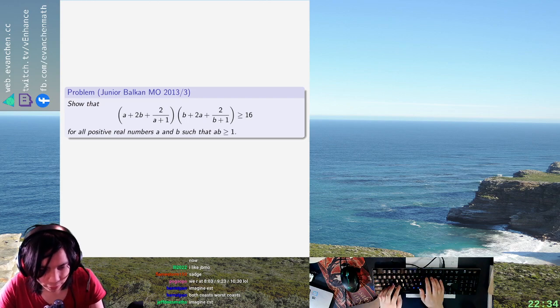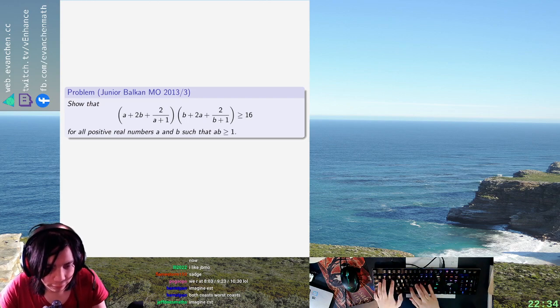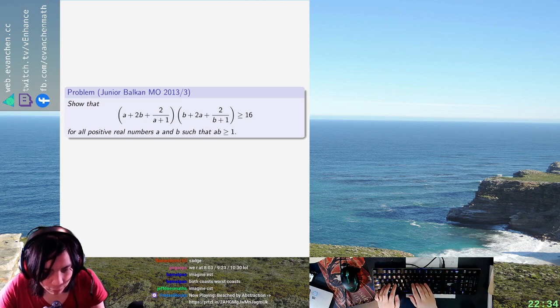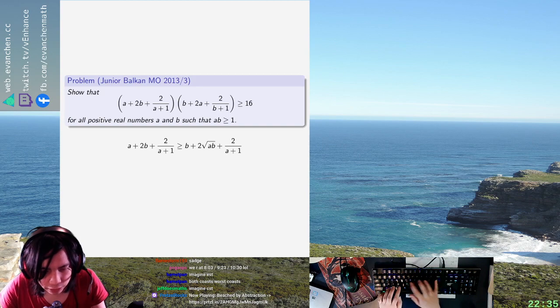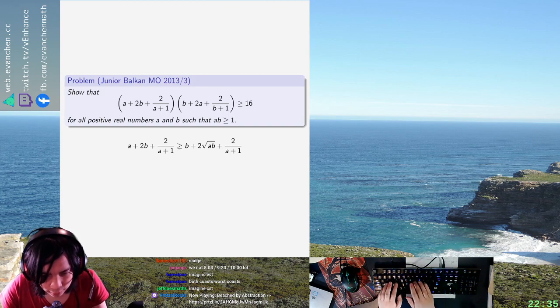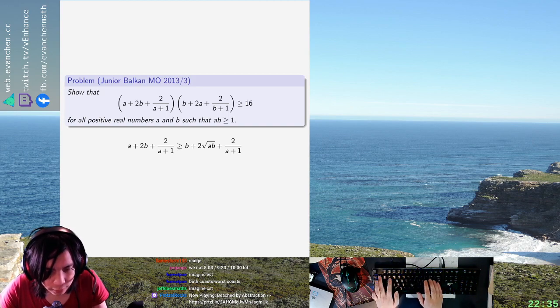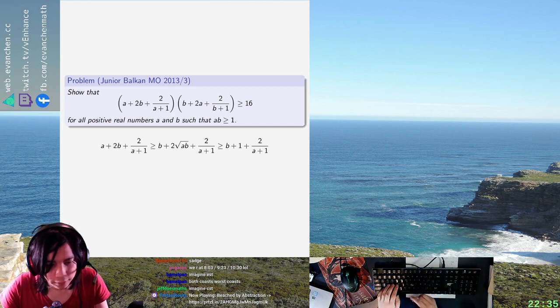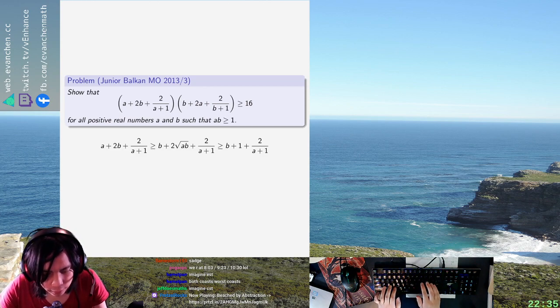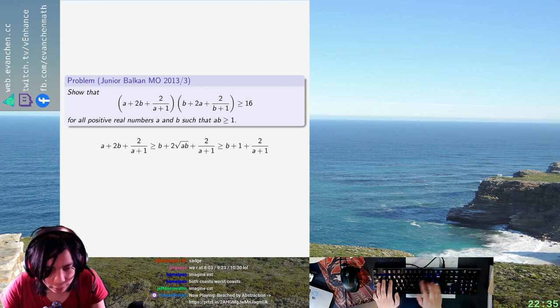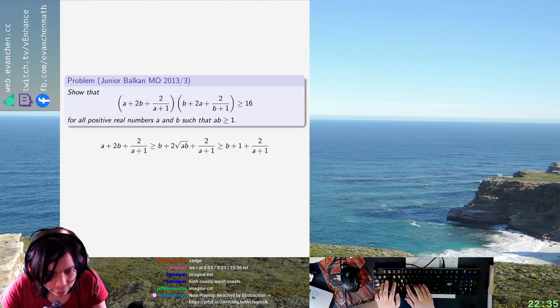Okay, so I believe that A plus 2B plus 2 over A plus 1 is at least B plus 2 root AB plus 2 over A plus 1 by AMGM. So, which this is at least B plus 1 plus 2 over A plus 1, and similarly for the other one. So now, B plus 1 plus 2 over A plus 1 times A plus 1 plus 2 over B plus 1, if I rearrange the terms...